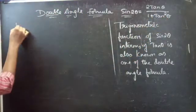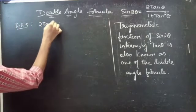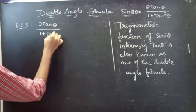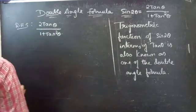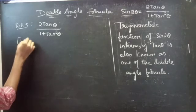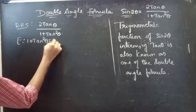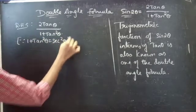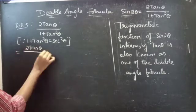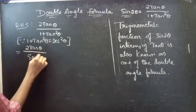So let's consider RHS: 2tanθ / (1 + tan²θ). This equals — since we have 1 + tan²θ = sec²θ — this becomes 2tanθ, and we replace 1 + tan²θ by sec²θ.